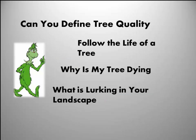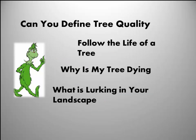What we're going to do today is talk about how to define quality - that's kind of a hard thing to pin down the benchmarks for. We'll follow the life of a tree from production to the landscape and talk about issues I commonly see in all those stages. We'll address the common question: why is my tree dying? We see so many things in the landscape but don't connect the dots. We'll also talk about what's lurking in your landscape - insects and diseases.